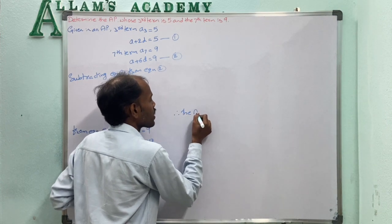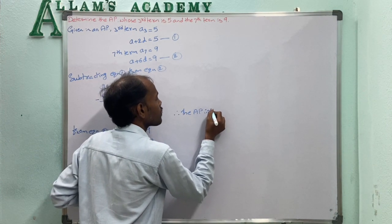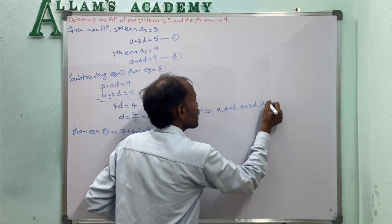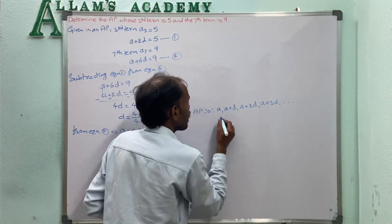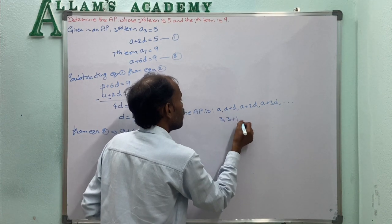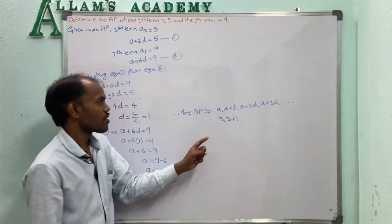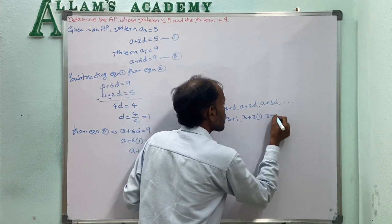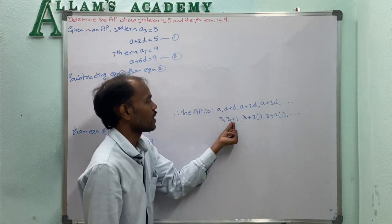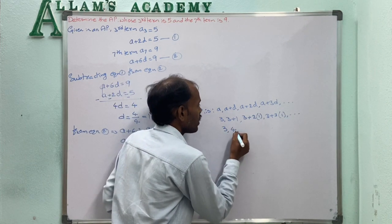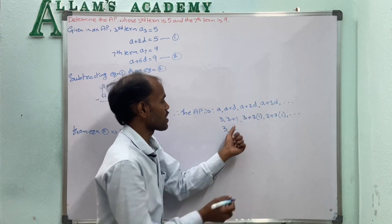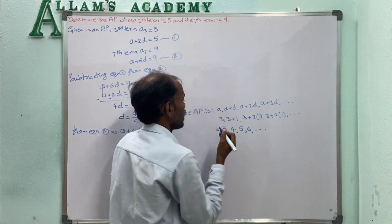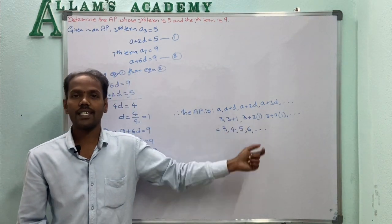The arithmetic progression AP is A, A+D, A+2D, A+3D, and so on. With A = 3 and D = 1: 3, 3+1=4, 3+2=5, 3+3=6, and so on. The arithmetic progression is 3, 4, 5, 6, and so on.